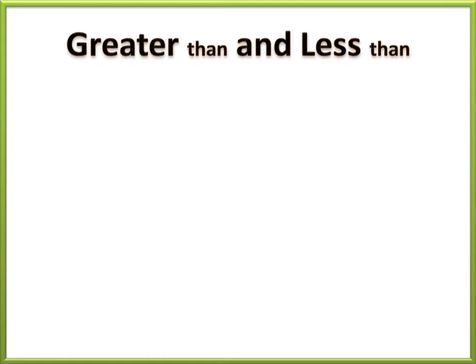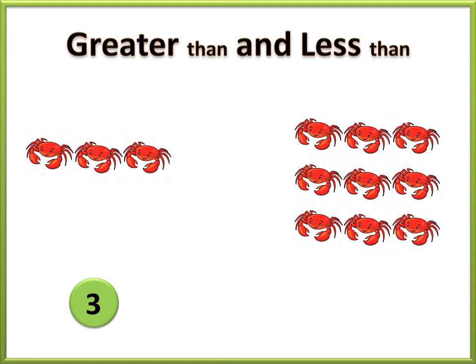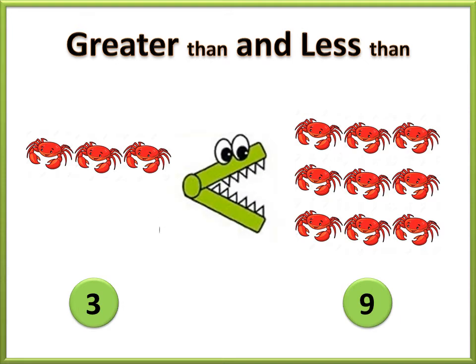Let us count the number of crabs. Five. Nine. Three is less than nine. So, we use the less than sign.